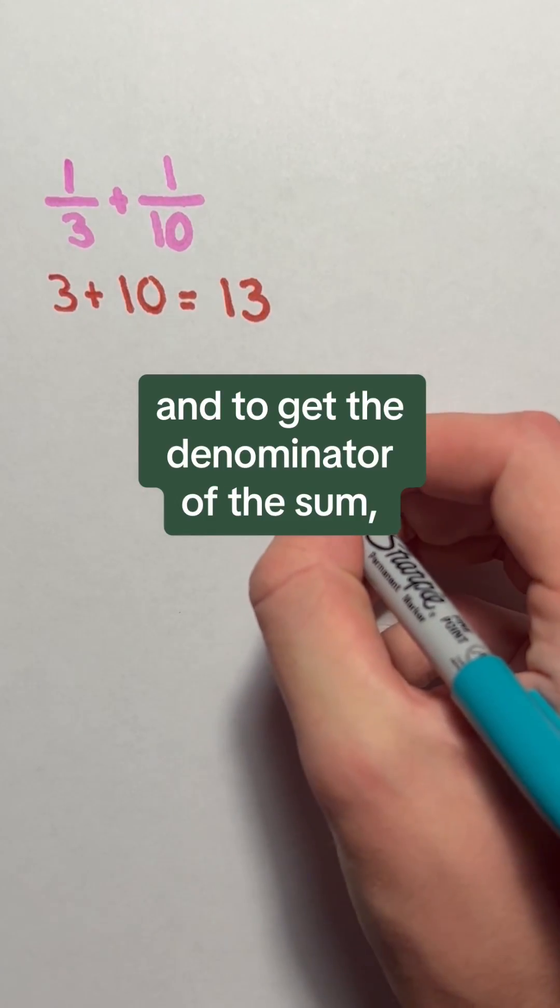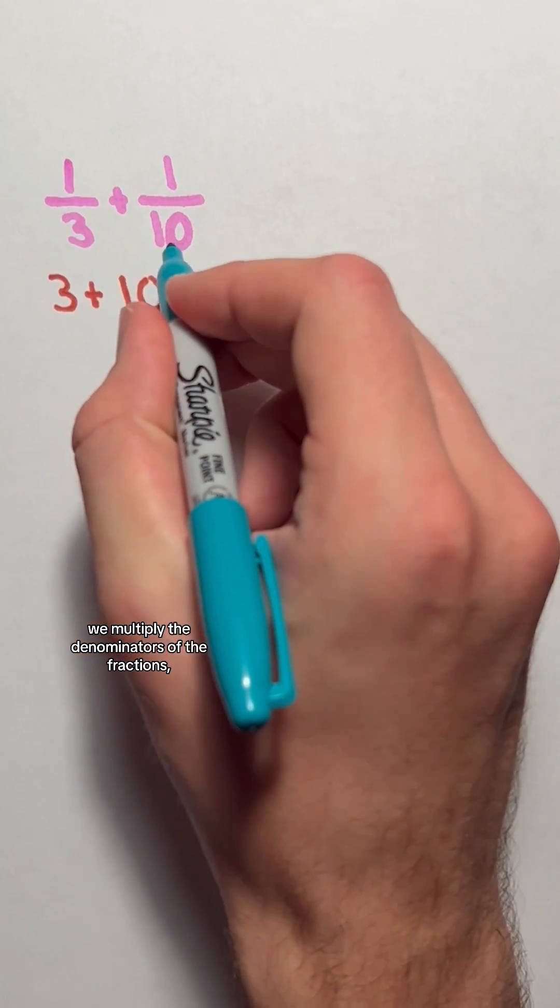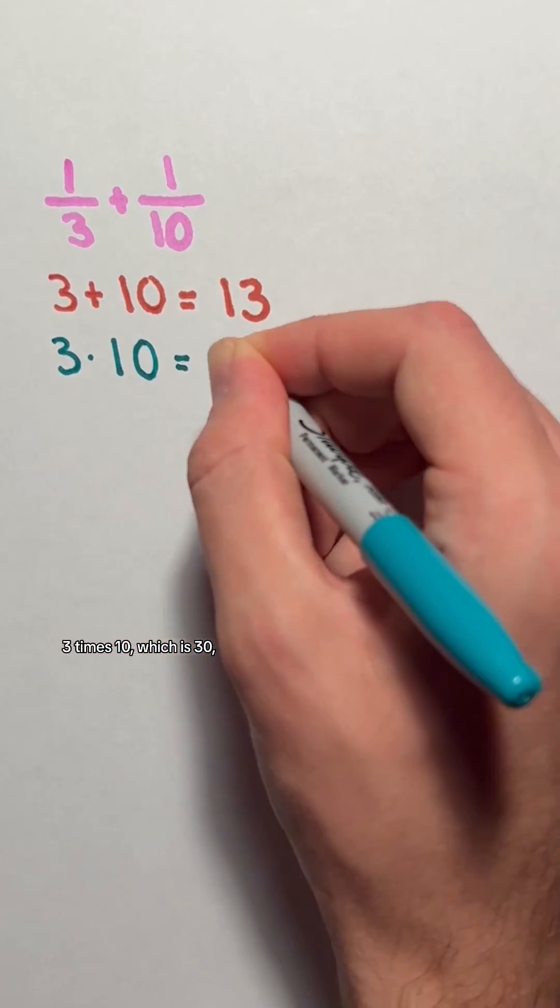And to get the denominator of the sum, we multiply the denominators of the fractions, 3 times 10, which is 30, so the sum is 13 over 30.